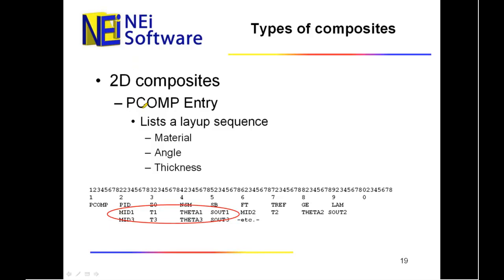In 2D composites, as I already pointed out, these are generally handled on the PCOMP entry. In the PCOMP entry, for each layup, you give it a material, an angle, and a thickness. You just give a list of those.